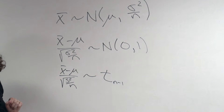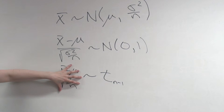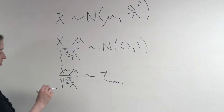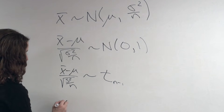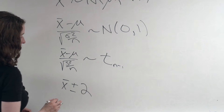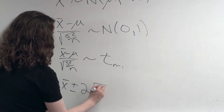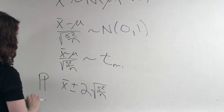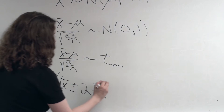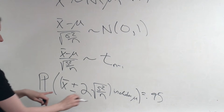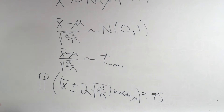We used this for a hypothesis test — we said, let's calculate this test statistic and compare it to this distribution in order to get a p-value. The other thing we did was we created confidence intervals. We said, let's take x-bar plus or minus the cutoff from the t-distribution, which is approximately equal to 2, times the square root of s squared over n, with the idea that the probability that this interval includes mu is equal to 0.95. This is what we did in the context of a one-sample t-test.